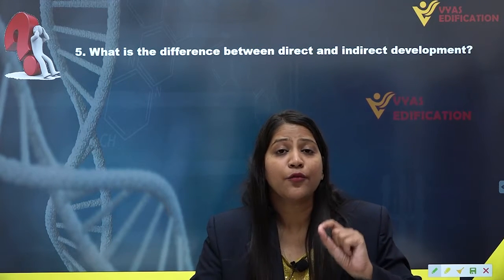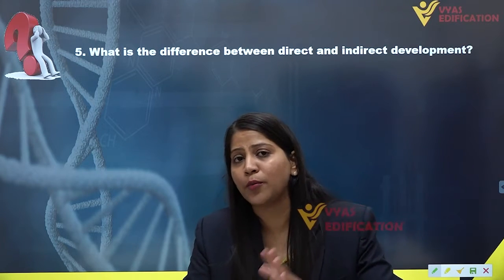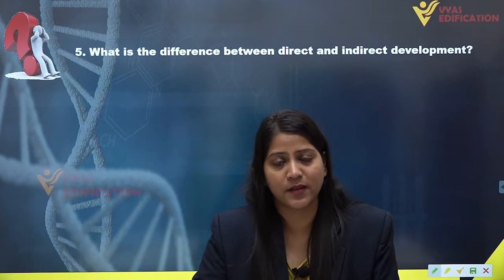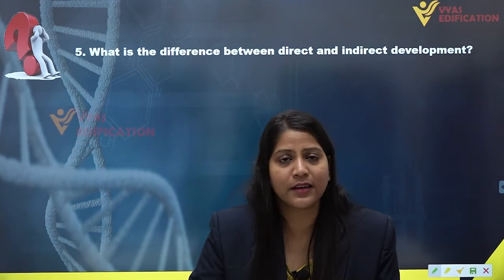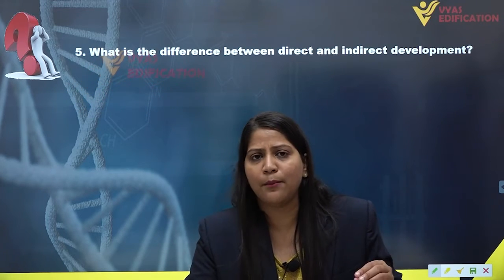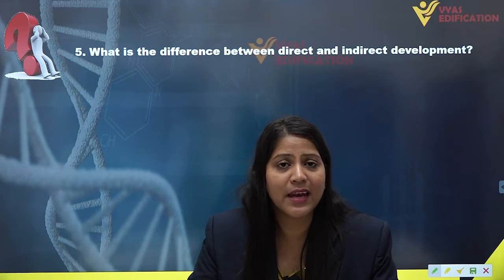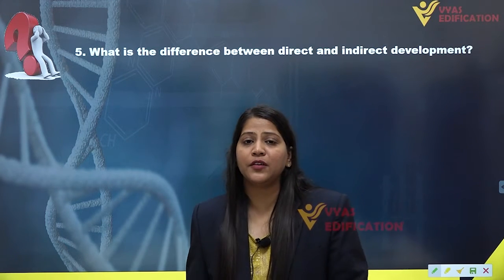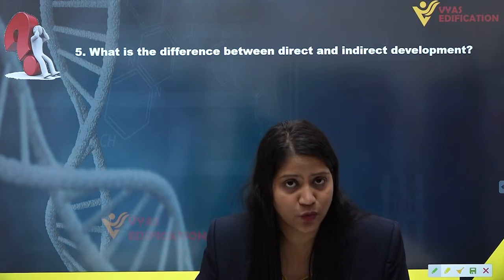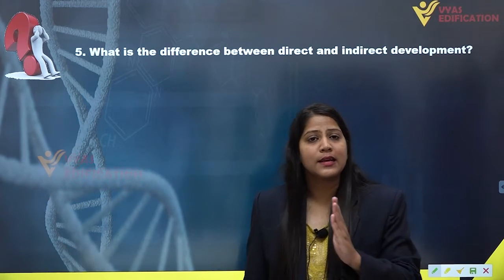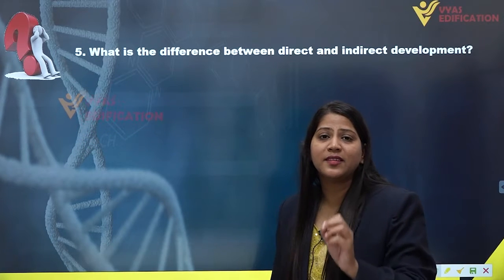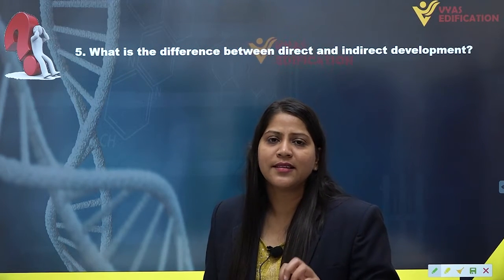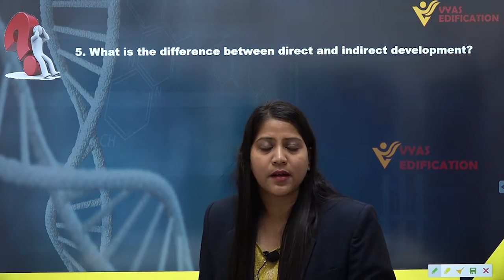Metamorphosis is a phenomenon in which the larva is transformed or developed into an adult individual. In indirect development, an embryo transforms into a larval stage and then into an adult. The larva has different food requirements than the adult. Metamorphosis can be seen in indirect development, which is observed in some phyla such as Amphibia of the animal kingdom.